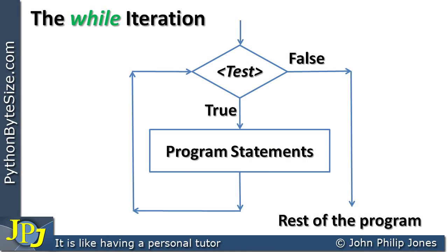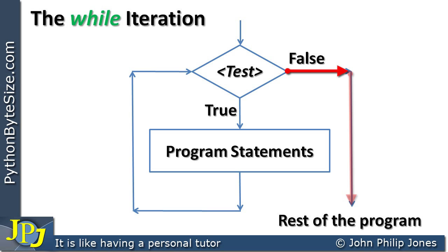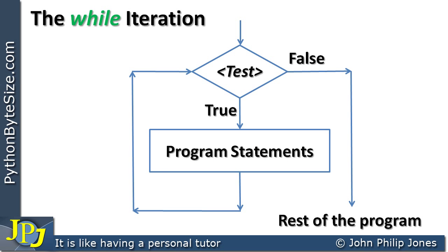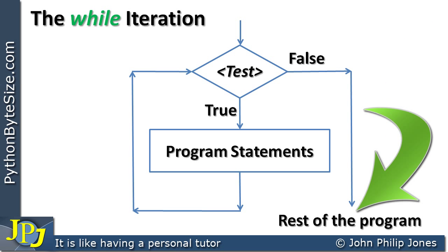Looking at the flowchart in isolation: there's a test inside the diamond shape. When this test is true, we execute the program statements. When this test is false, we do not execute those program statements — we go in a different direction. So there are essentially two things that can happen: when the test is true we enter the loop, and when it's false we leave the loop and carry on with the rest of the program.